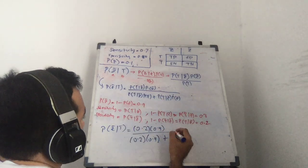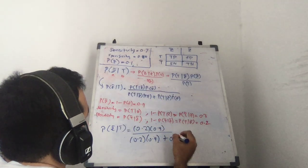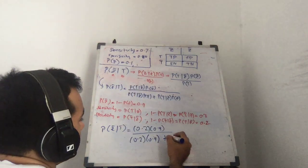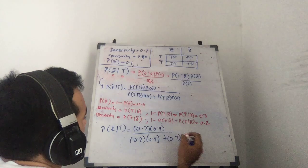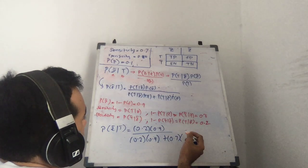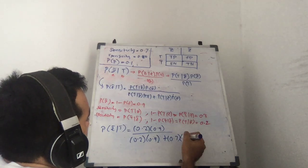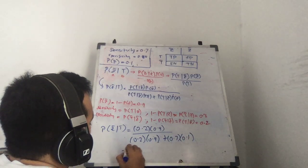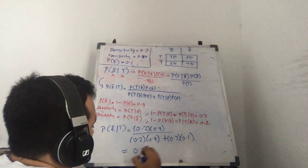0.2 times 0.9 plus probability of T given Z, which is your sensitivity, right? And that's 0.7 times your prevalence, 0.1, right? And that should give you 0.72.